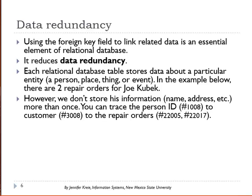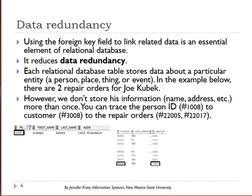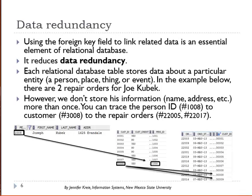In the example below, there are two repair orders for Joe Kubek. We can find his pers ID, trace it to his pers ID in customer, take the customer ID, and trace that to the customer ID in the repair order. And we find the corresponding repair orders for Joe Kubek.